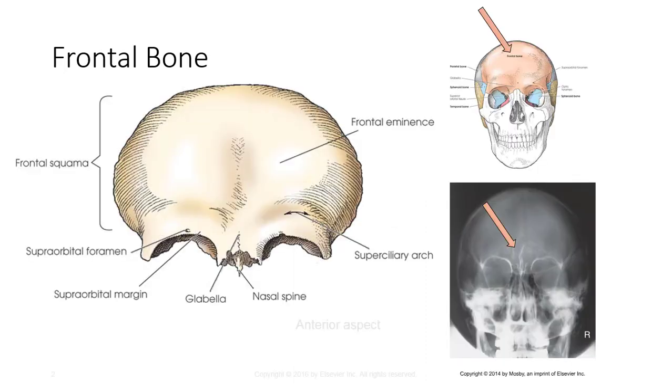The frontal bone has a vertical portion called the frontal squama, which forms the forehead and the anterior part of the cranial vault.